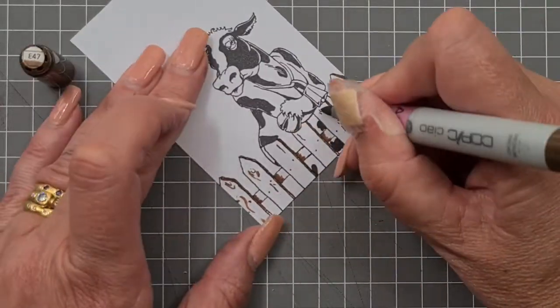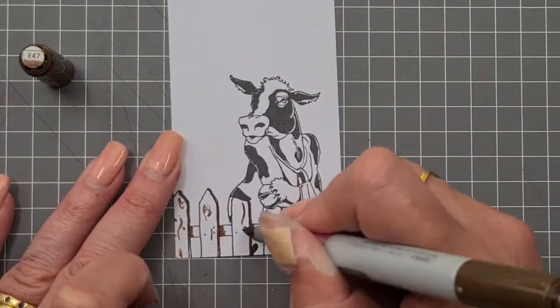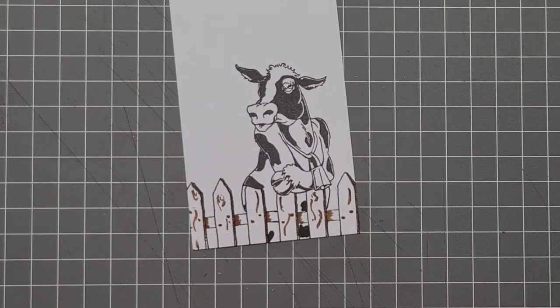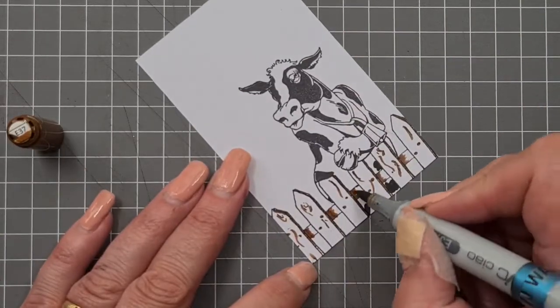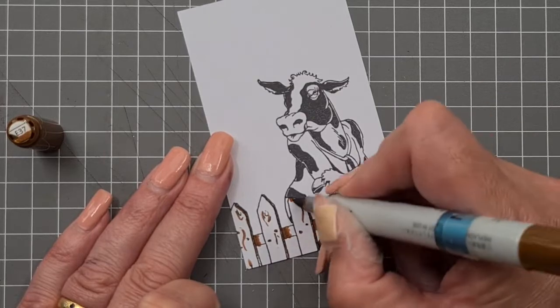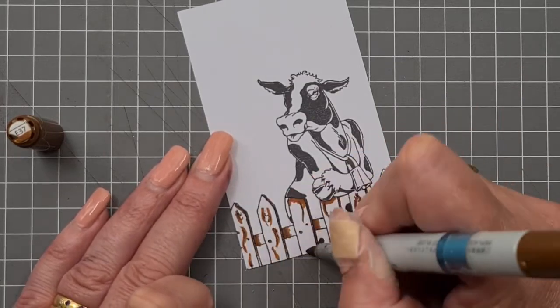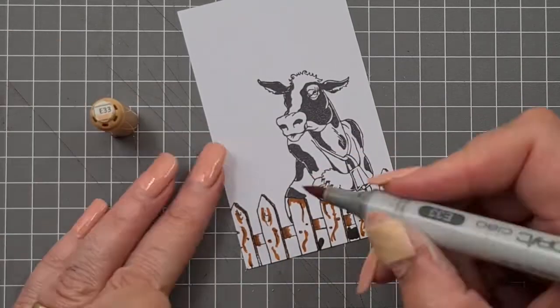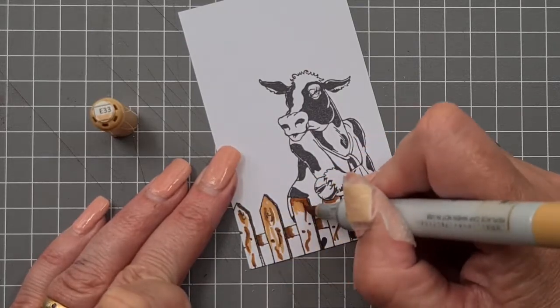My wood coloring is going to be E47, 37, 33, and 31. I'm going to try and keep my shading on the left-hand side. At the moment it's going to look like a hot mess until it doesn't.